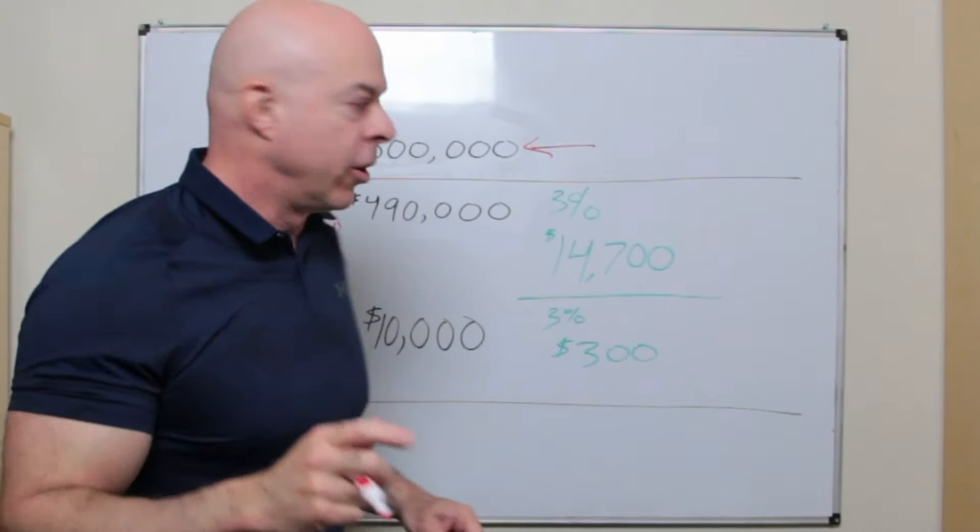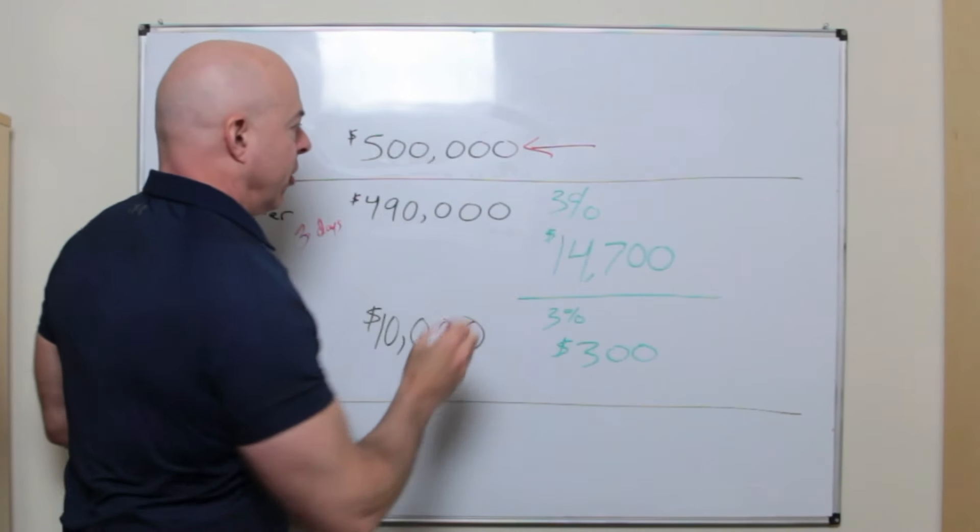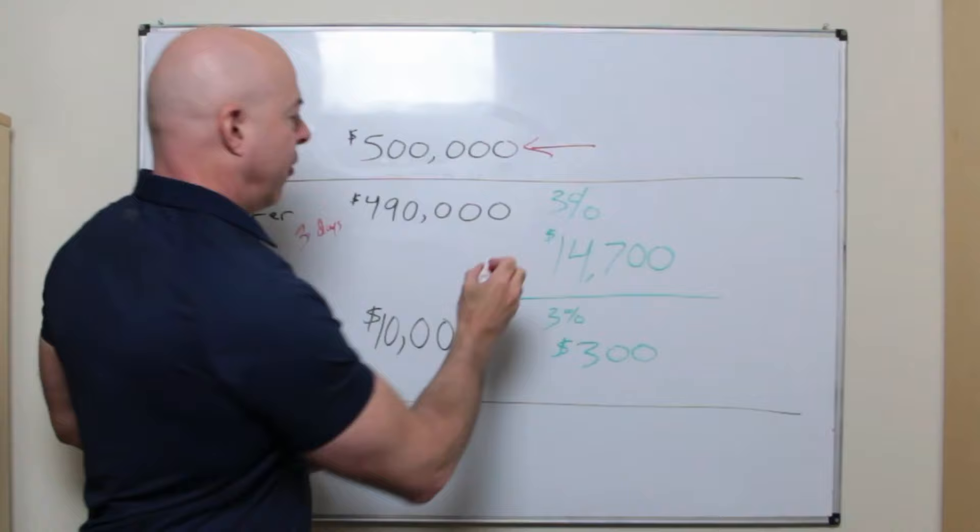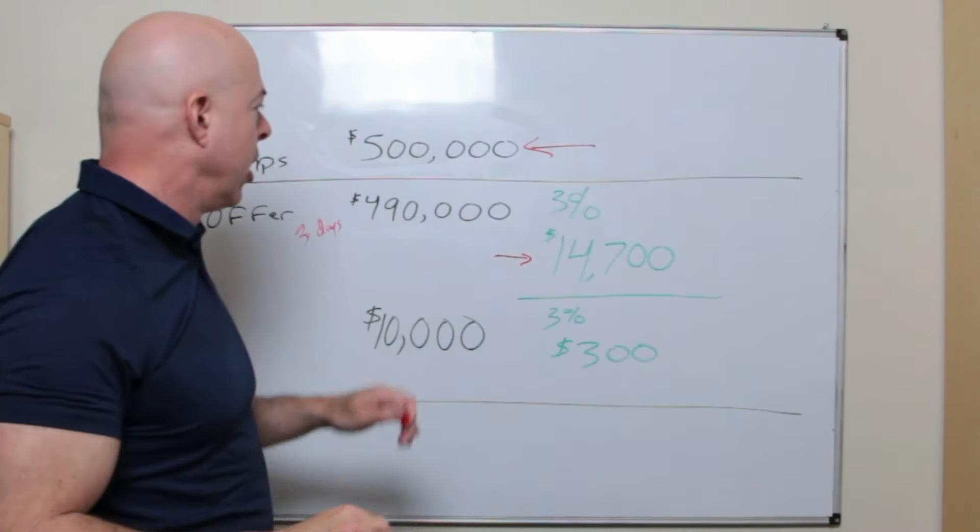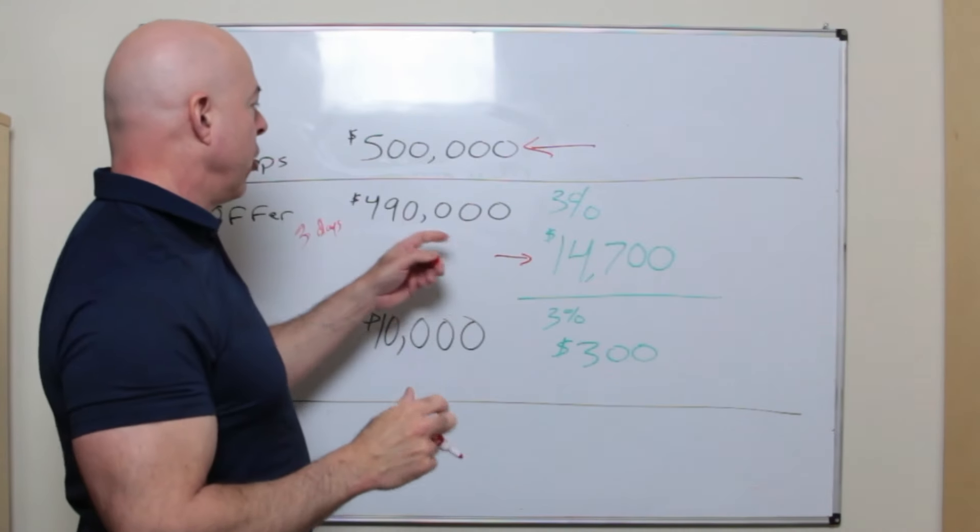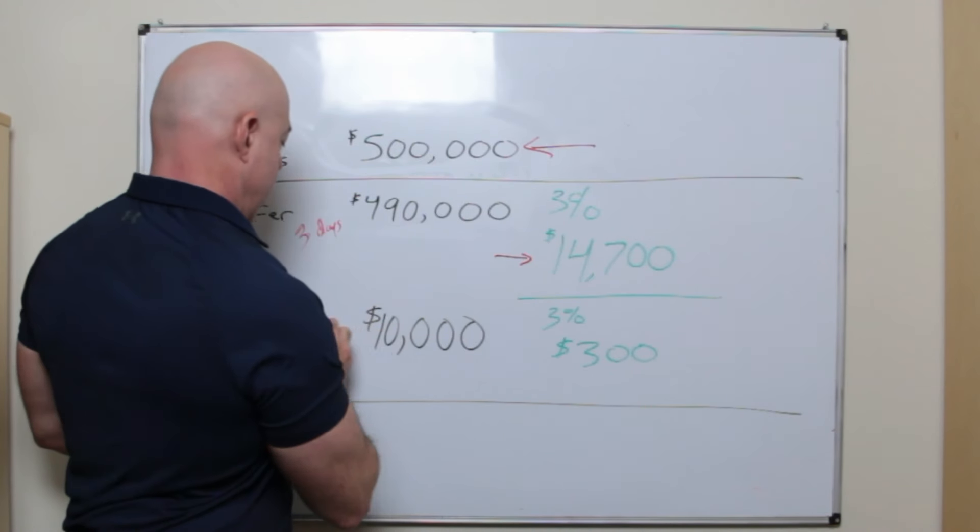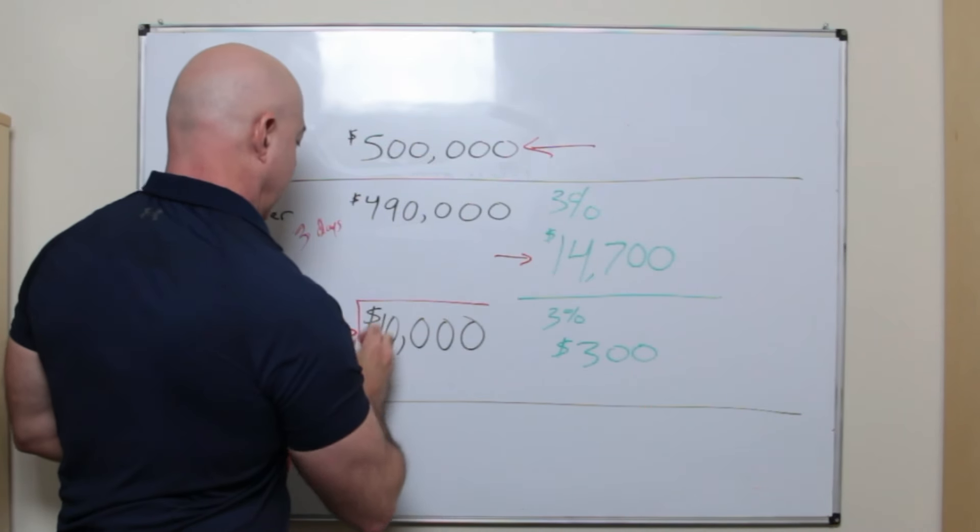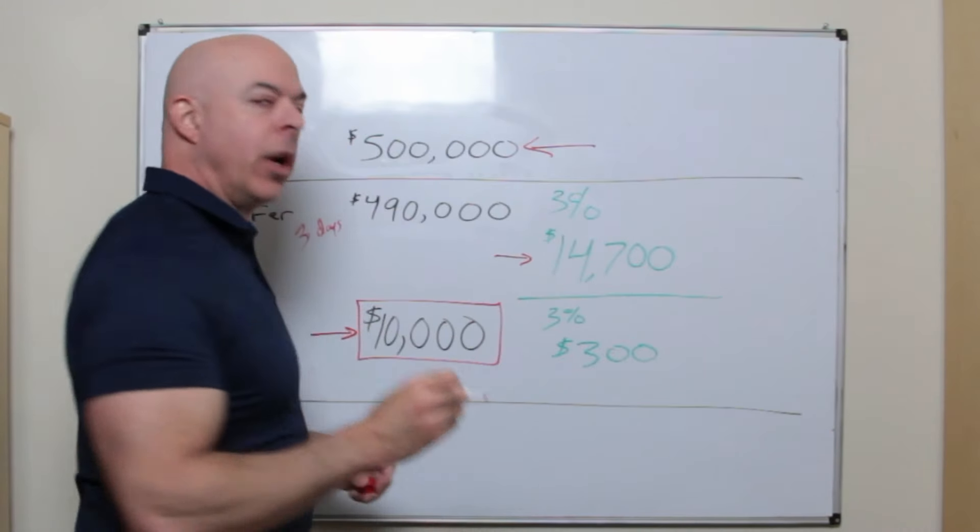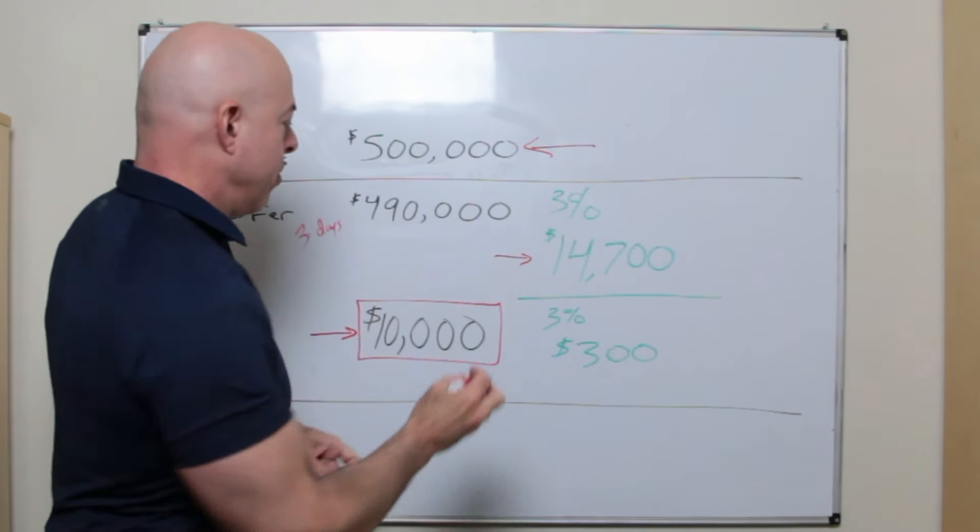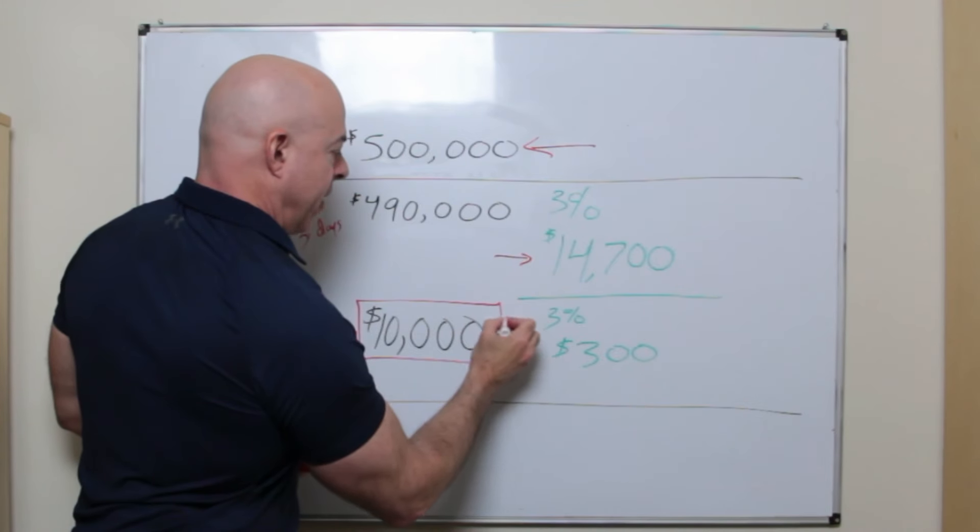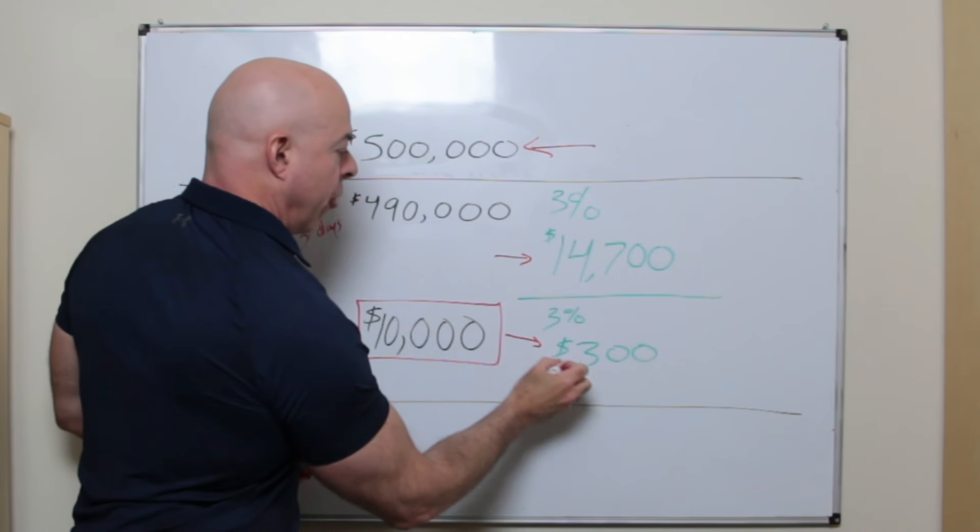So the realtor is going to get 3% of that price. That's $14,700. They're very happy. They made that in three days. You say, I want another $10,000, right? Because everyone else is getting it. Why shouldn't I? What does that mean for the realtor? Another $10,000 would mean 3% of this 10,000 and that's $300.